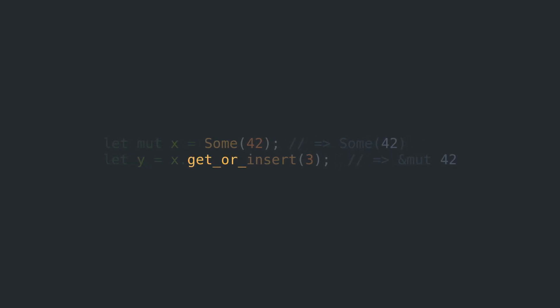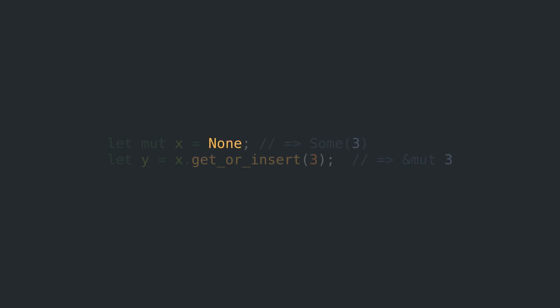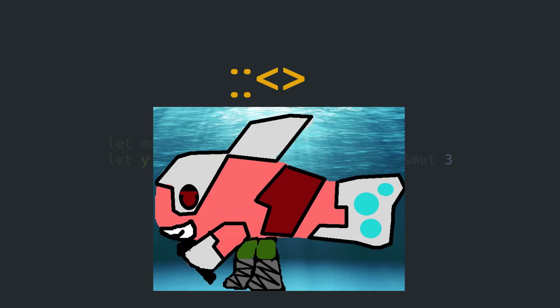get_or_insert does exactly what it says. If there's something in the option, it will get you a reference to the content. If there's nothing inside, it will insert the value and also return the reference. And if you've been wondering whether all these Nones should have a turbofish type annotation — yes, they should.